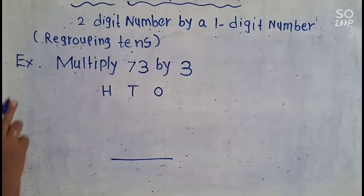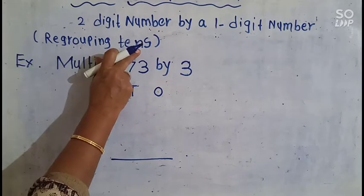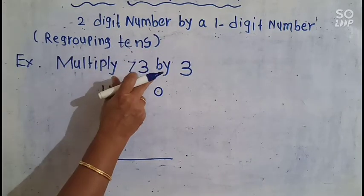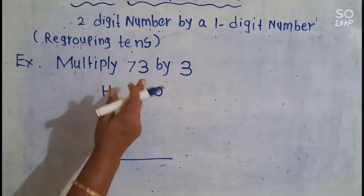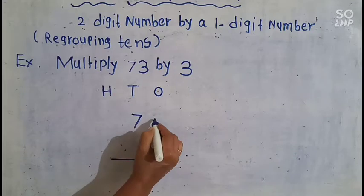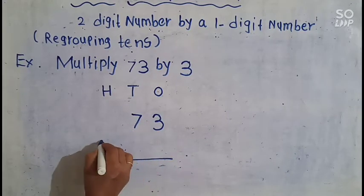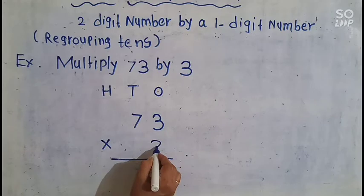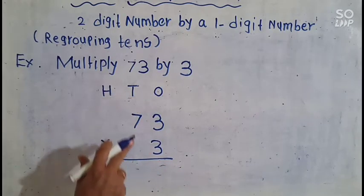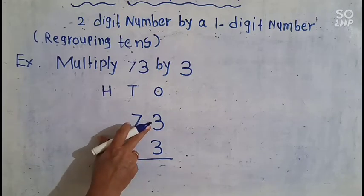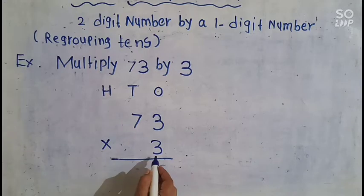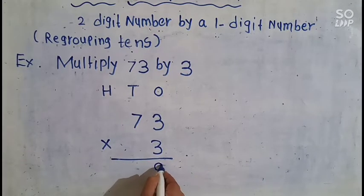Here is another example of regrouping 10s. Multiply 73 by 3. 73 is a 2-digit number, so write 73 and multiply by 3. We have to do the 1s multiplication first. 3 3s are — tell me: 3 1s are 3, 3 2s are 6, 3 3s are 9.